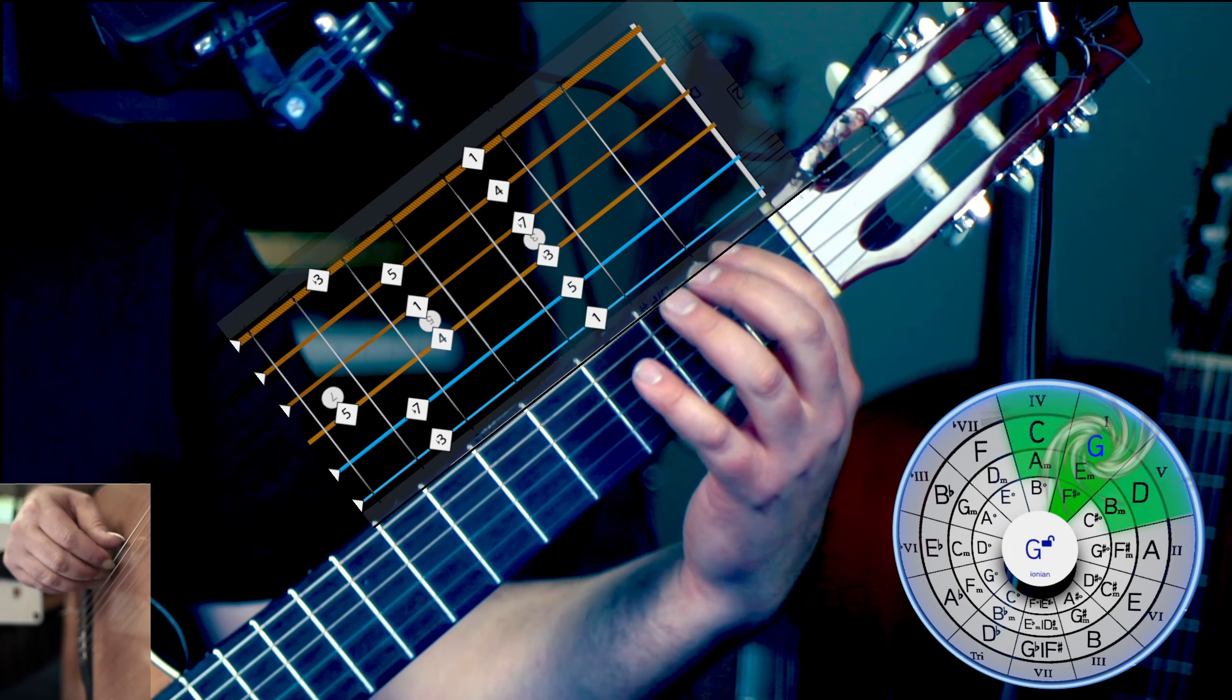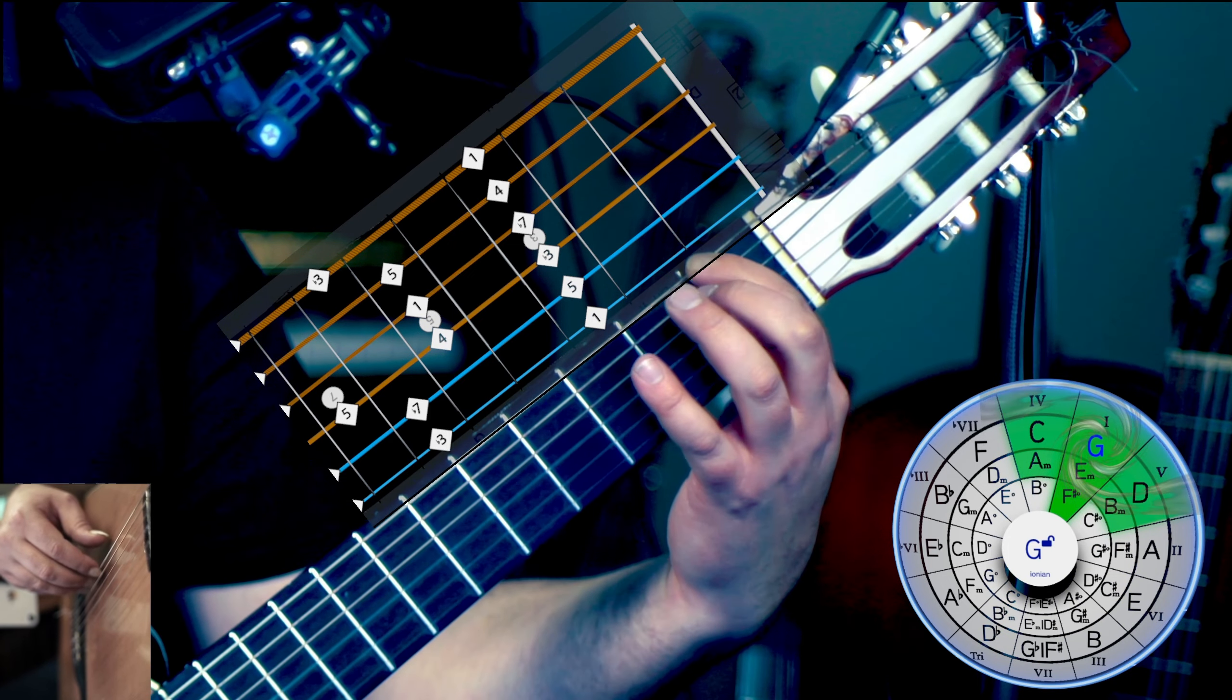Alright, now we need the bass line. Now it's just G minor pentatonic, but we're going to start on the low flat 7. Here we go.